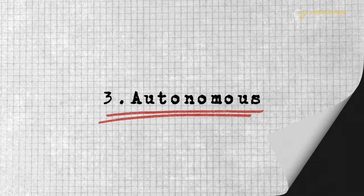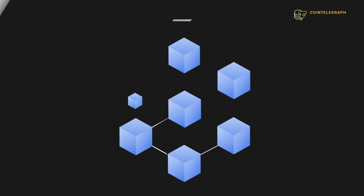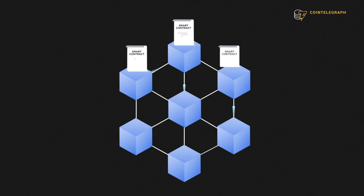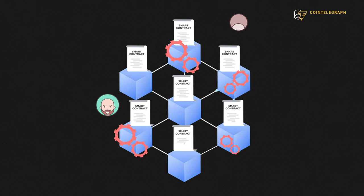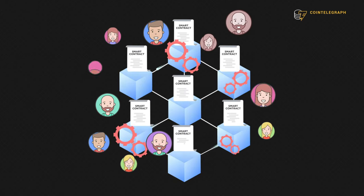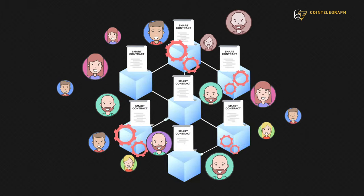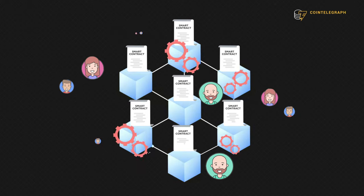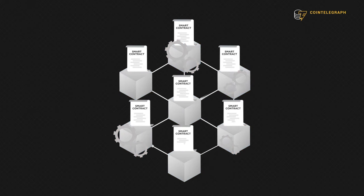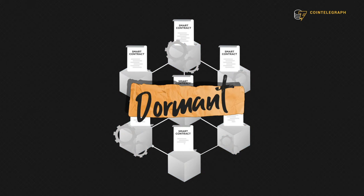Autonomous. Smart contracts don't need to be operated. Once they're deployed on the blockchain, they run on their own. Users can interact with the contract and once the conditions of the contract are met, the contract will automatically execute. In most cases though, if a smart contract isn't triggered, it will stay dormant and won't perform any action.